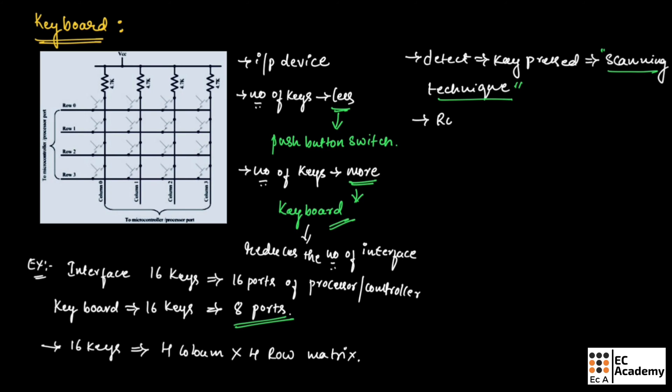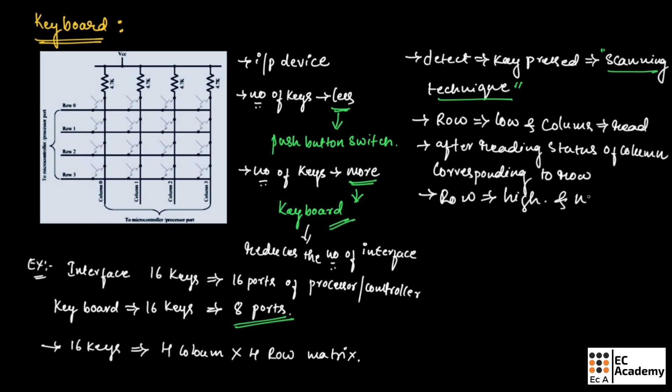Here each row of matrix is pulled low and columns are read. After reading the status of each column corresponding to row, the row is pulled high and next row is pulled low and the status of columns are read. This process is repeated until each row is scanned.